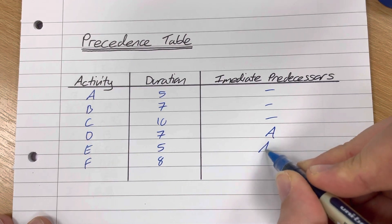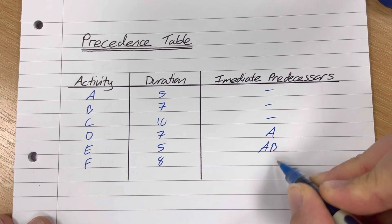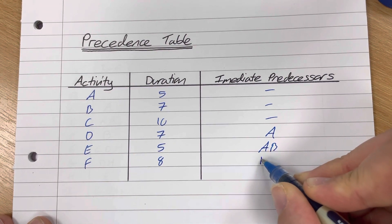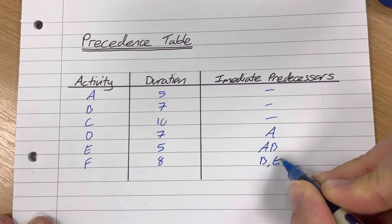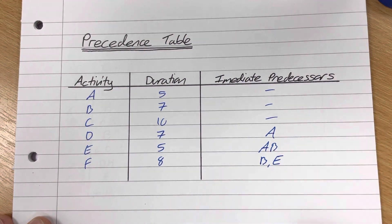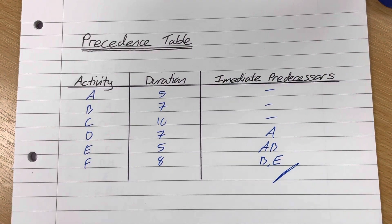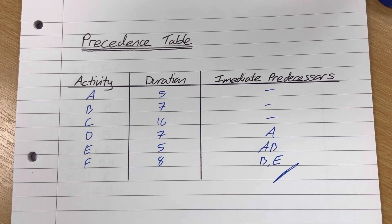So, maybe three or four activities which are blank. That one has A, A, B, B, E - something like that. That's what a precedence table will look like, and you need to be able to draw the activity-on-arc network from the table.